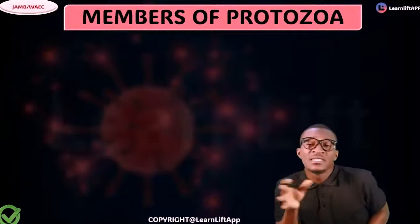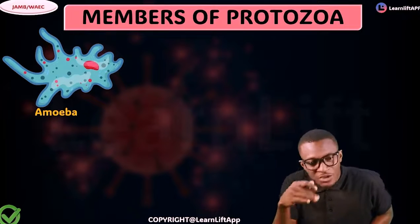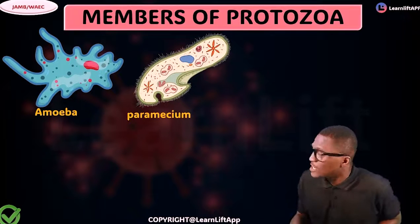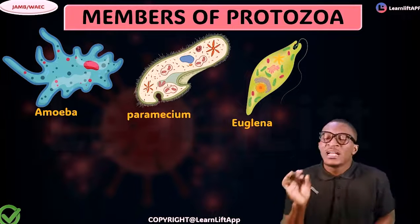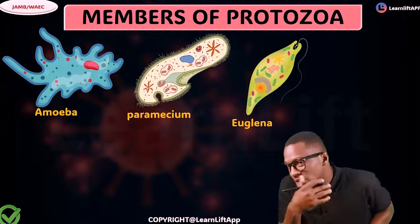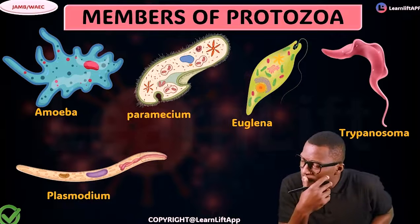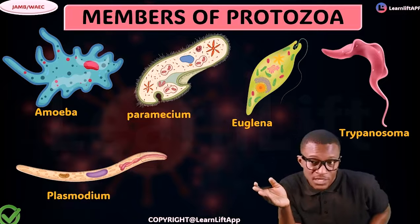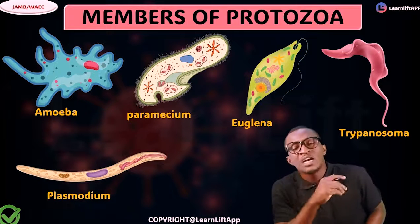Now let's talk about the representative members of the Protozoa. The first is the Amoeba, then the Paramecium, then the Euglena, and we also have the Trypanosoma and the Plasmodium. Trypanosoma is what causes sleeping sickness, and Plasmodium is what causes malaria.